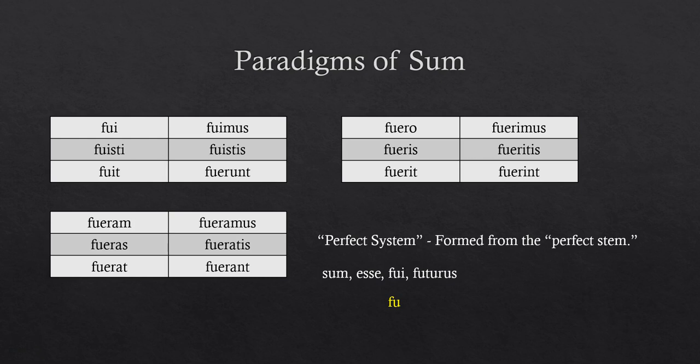We won't see the perfect of 'sum' quite as much as 'eram', because the imperfect tense shows action over time, whereas the perfect tense shows a single momentary action. When we say 'was' or 'were', typically we mean something was going on for a while — like 'when I was six', I was six for a whole year, so that's the imperfect. Remember that that 'fu-' stem is a form of 'sum'.